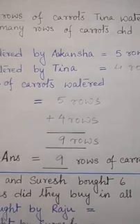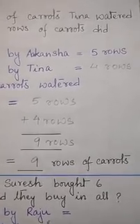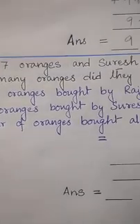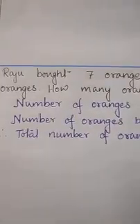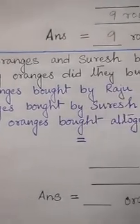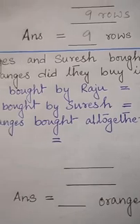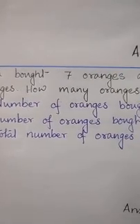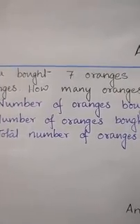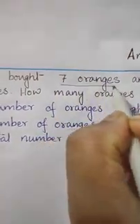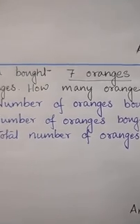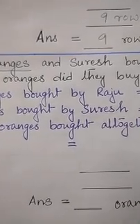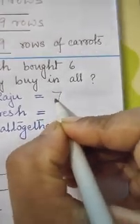So this way you will do the word problems. Now we will go to the next question. The next question is: Raju bought seven oranges and Suresh bought six oranges. How many oranges did they buy in all? Let's see the first part — Raju bought seven oranges. So how many oranges did Raju buy? That is seven oranges.